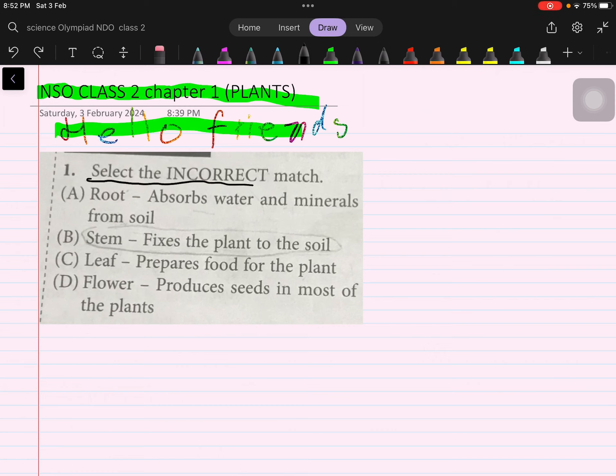Select the incorrect match. Let's start from the beginning. Root absorbs water and minerals from soil. Stem fixes the plant to the soil - no, it's wrong. That's the correct option. We found it. What will we bubble? B.